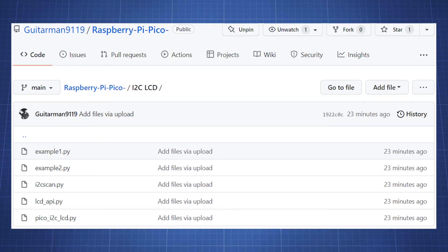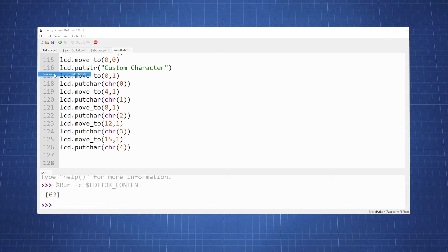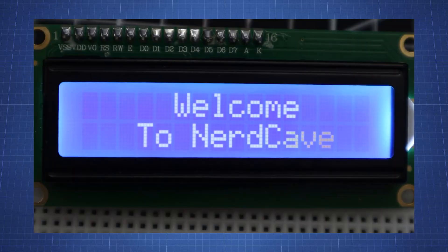Now go back to my GitHub repository and open example 1. Copy all the code and create a new file in Thonny and paste it. This example is very basic, showing you how to write text to the screen and create custom characters. Here is a short demo.